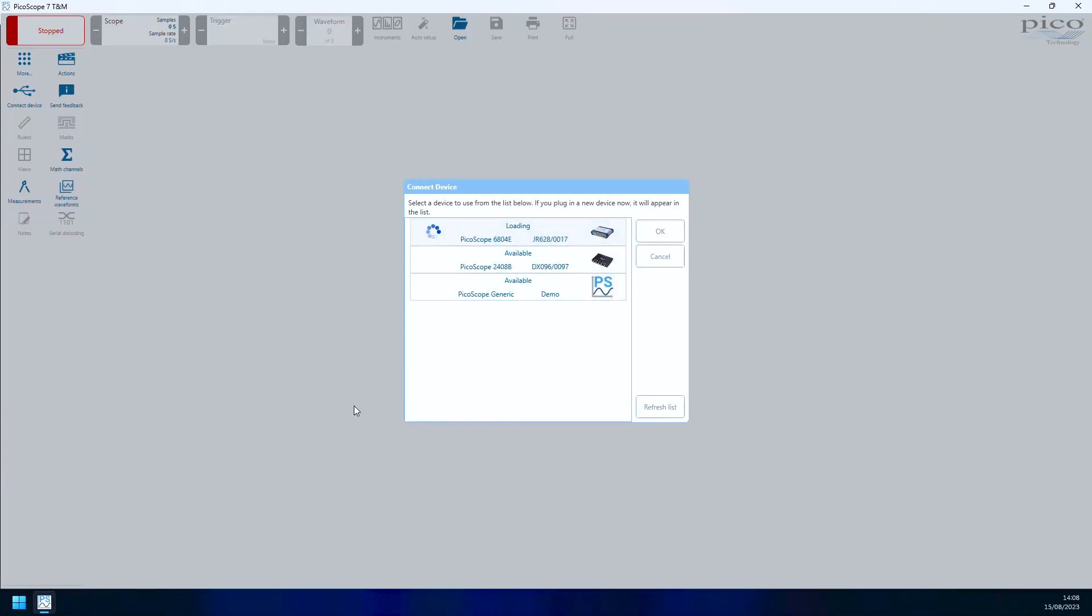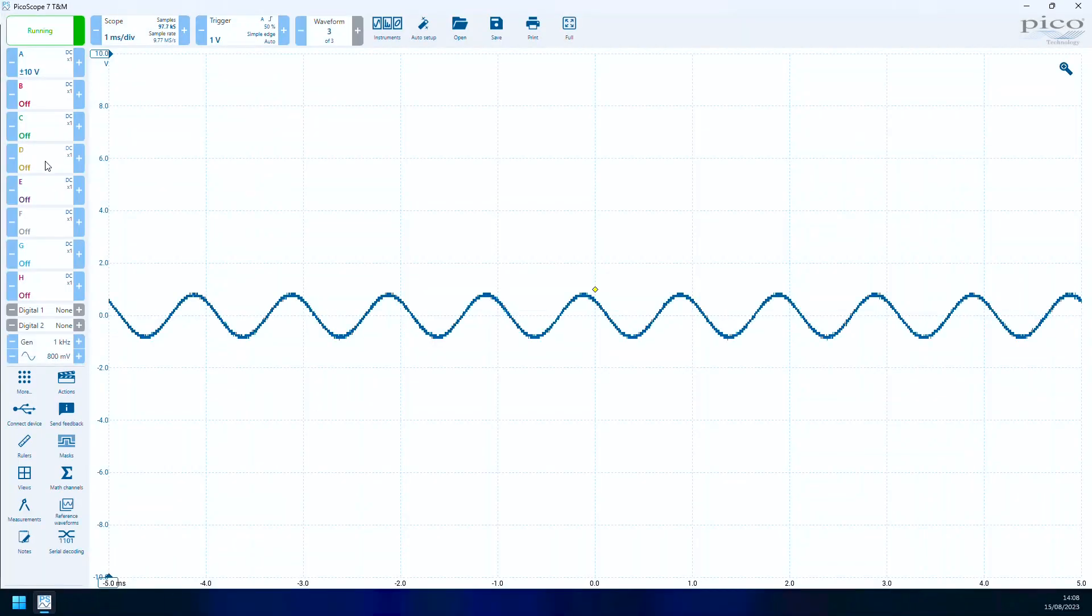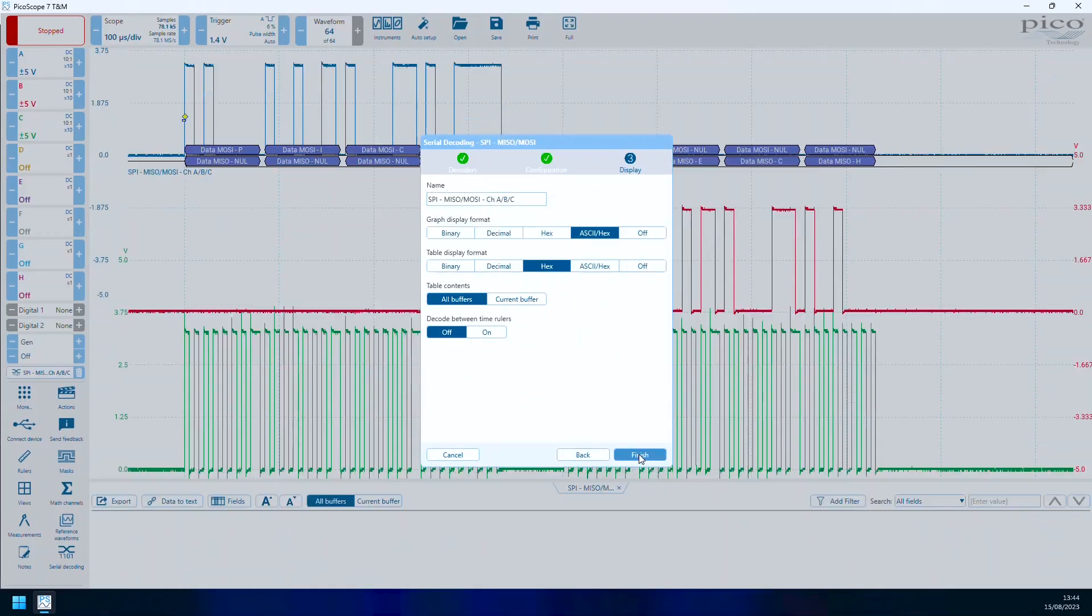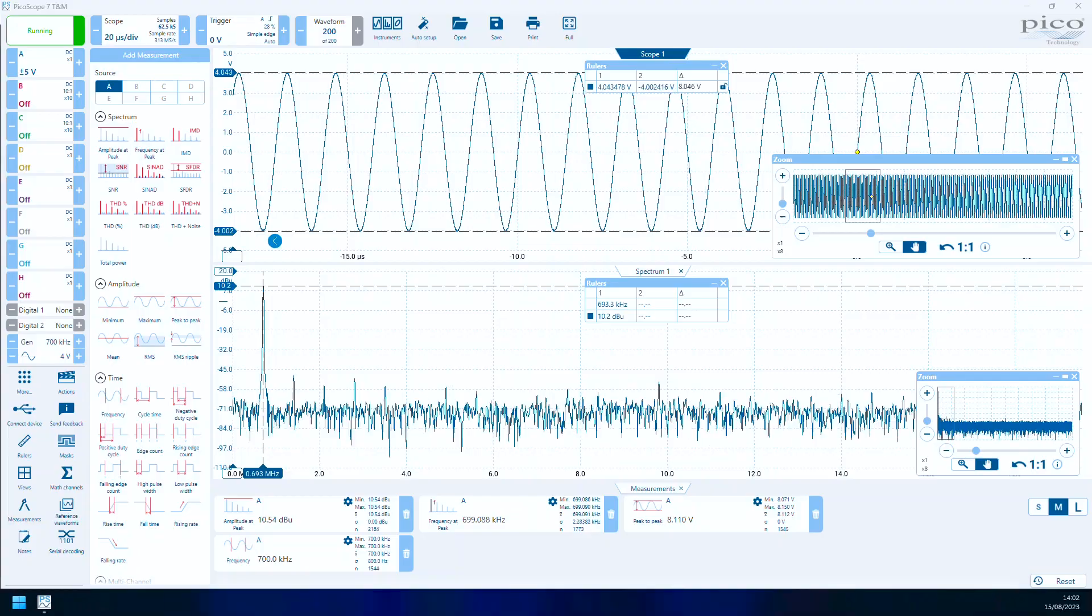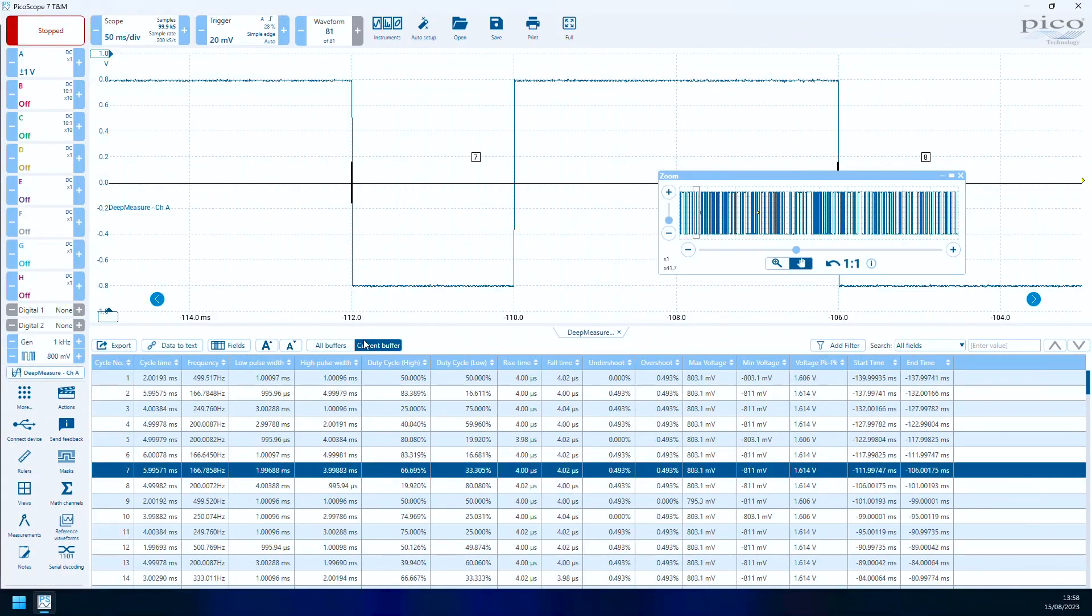the provided PicoScope 7 software boasts an array of advanced features designed to meet the demands of the most complex applications with a growing number of serial decoding protocols, automated measurements, mask limit testing, and waveform buffer memory for deep measured testing.